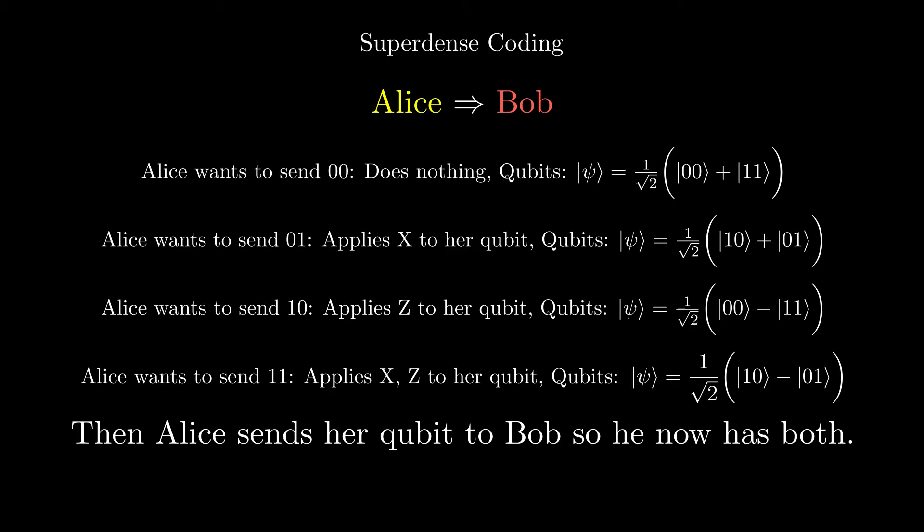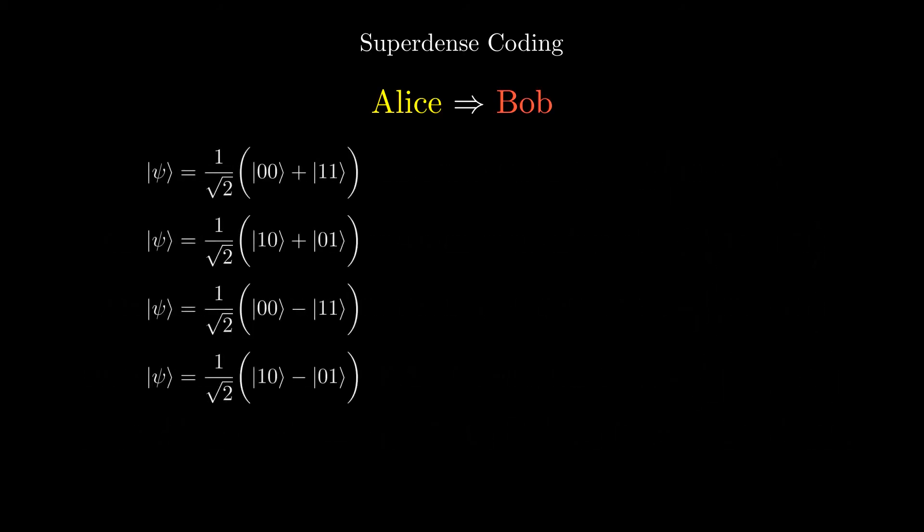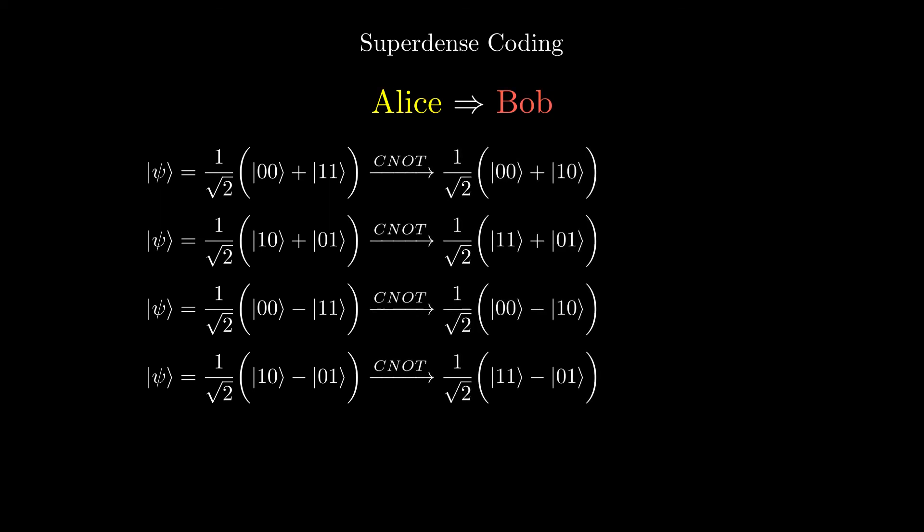Now Bob has both the qubits in one of these four states. He now applies a CNOT with the first qubit as the control, and the second as the target, giving us these states. Then he applies a Hadamard gate to the left qubit. This gives us this state that Alice wanted to send.